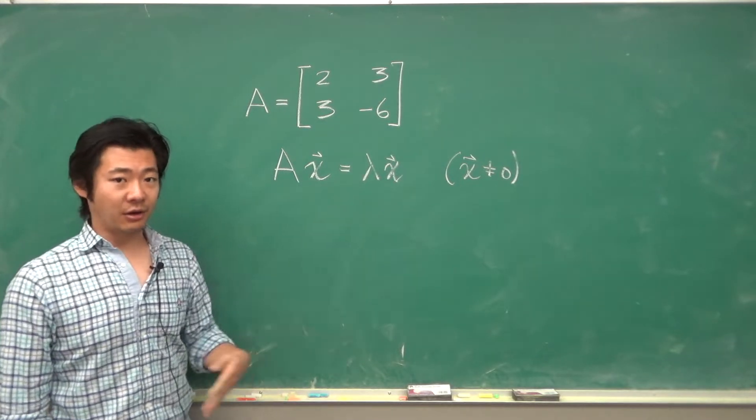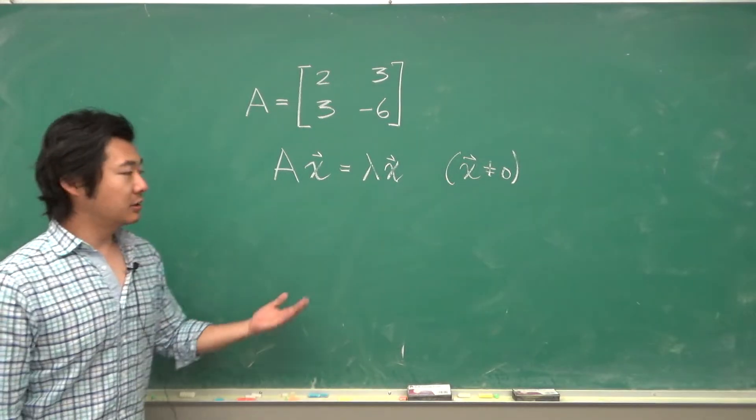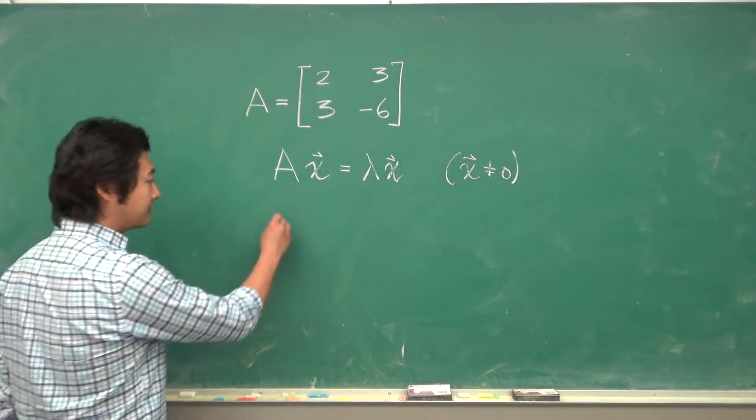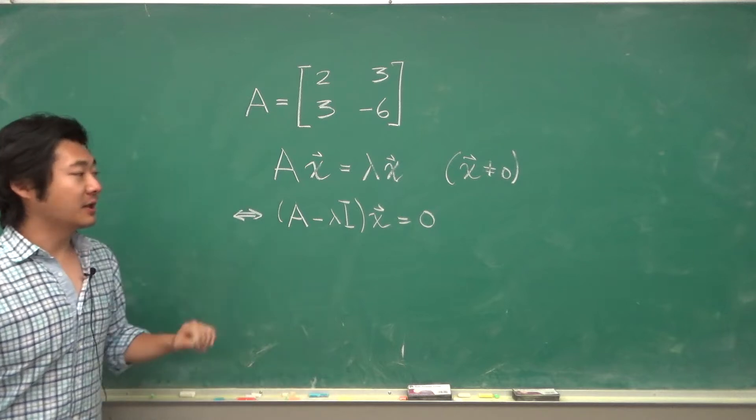The scalar lambda could be 0. It's the vector that can't be 0. So in order to solve this equation we will rewrite this in homogeneous form. So that's A minus lambda I times x equals 0.